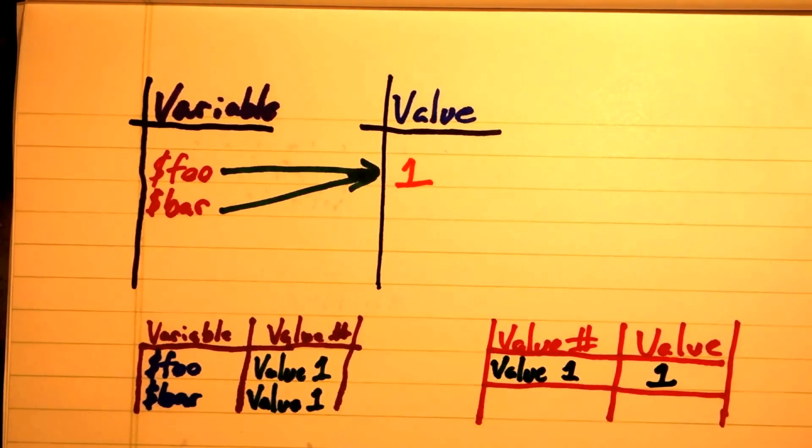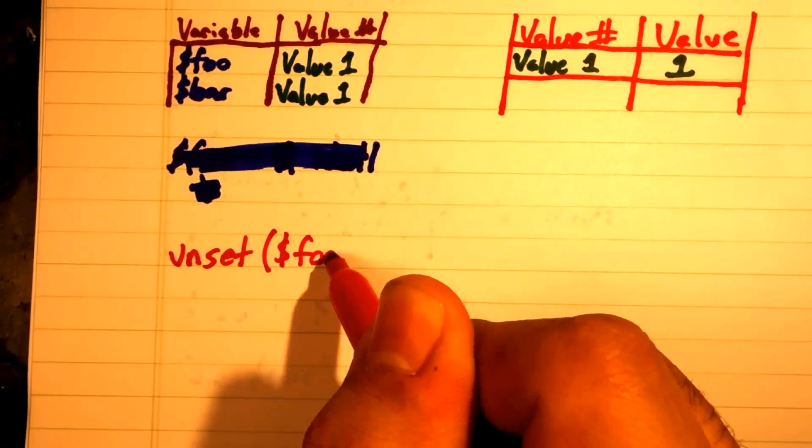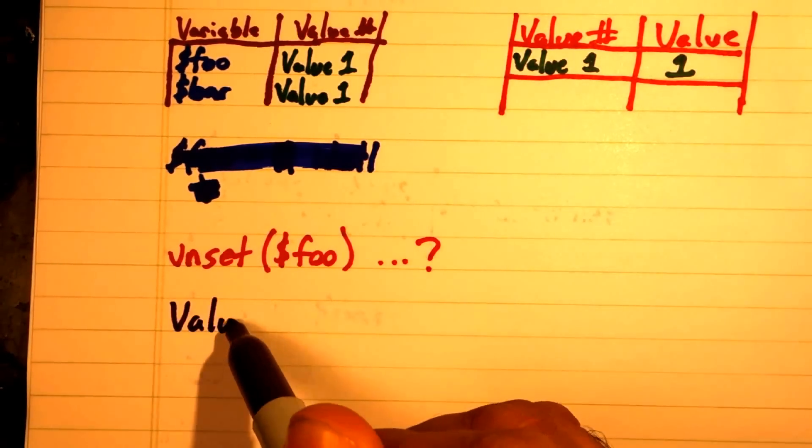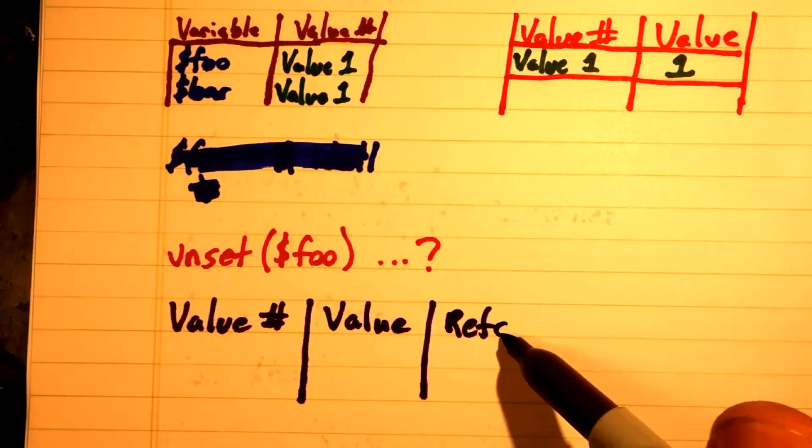This introduces a new problem, though. When we delete a variable, how do we know if we can delete the value? The way PHP solves this is by keeping a count of the number of references to a value.